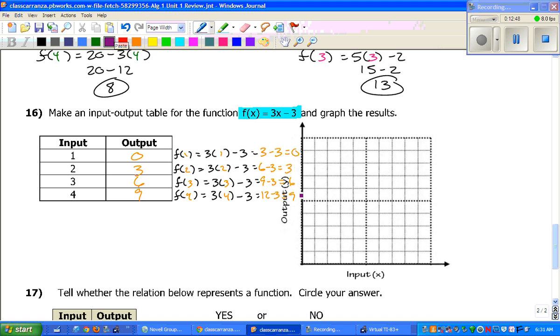So making our graph, it's kind of hard to see some of these numbers right here. These are your points on the left. So, it's 1, 0, 2, 3, 3, 6, and 4, 9. So, our input is on the bottom. Our input is 1, our output was 0. Our input was 2, our output was 3. 3, 6, 4, 9. And then the last thing you've got to do is draw the line.